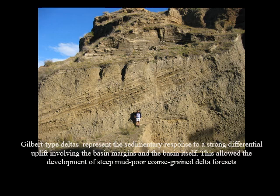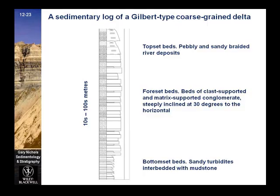This is an example of a Gilbert-type delta found in Mindanao in Cagayan de Oro. Gilbert-type deltas may represent a sedimentary response to strong differential uplift involving the basin margins and the basin itself, allowing the development of steep, mud-poor, coarse-grained delta foresets. This is a sedimentary log of a Gilbert-type coarse-grained delta consisting of bottomsets, foresets, and topsets. Note that in all phases, the grain size is normally coarser than typical delta deposits.